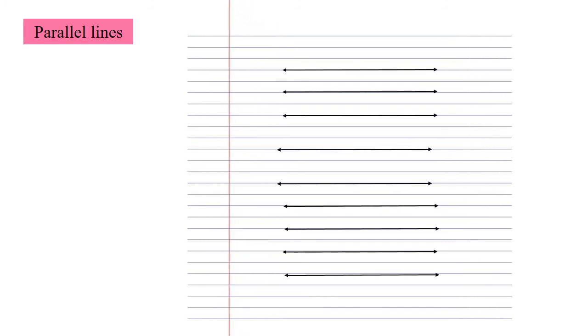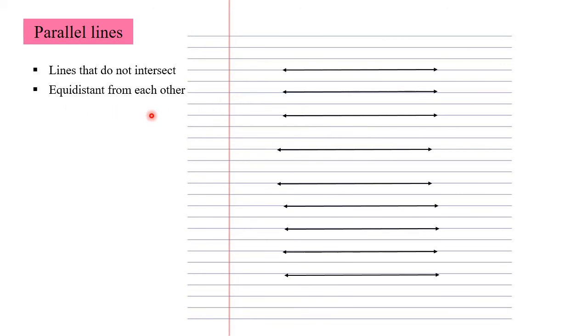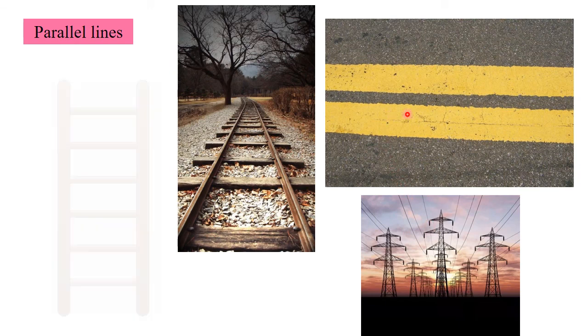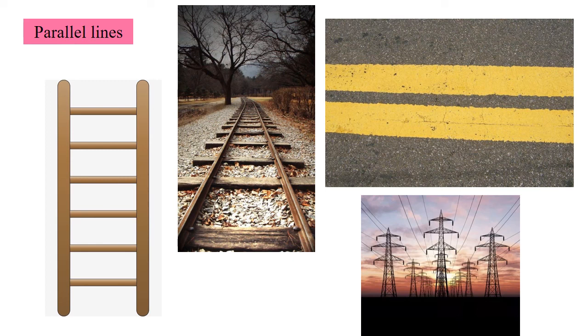Now let's learn about parallel lines. Look at this page from a notebook — it is part of a plane. If we extend the lines that run sideways on the page, will they meet each other? No, they do not meet. Such lines are called parallel lines. Lines which do not intersect are called parallel lines, and they are equidistant from each other. We have many examples of parallel lines in our surroundings, such as lines on the road.